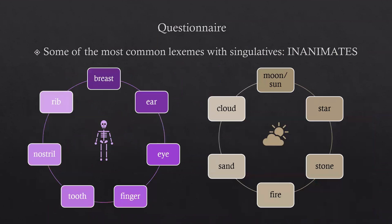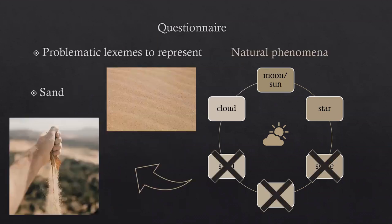For inanimates: body parts such as breast, ear, eye, finger, tooth, nostril, rib, and others. Natural phenomena include moon, sun, star, stone, fire, and cloud. Sand is an example of something problematic to represent — if I try to elicit one grain of sand, I even took pictures with a grain of sand on my finger, but you might get 'finger' as a response instead. Or a picture might yield 'hand' or 'leaf'.